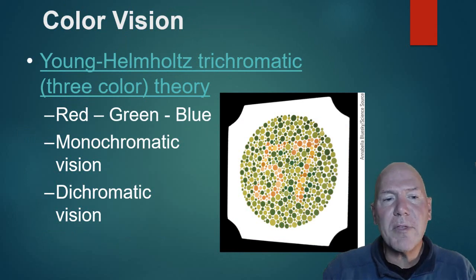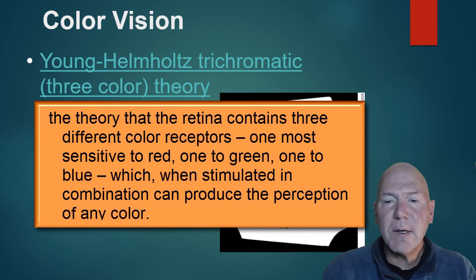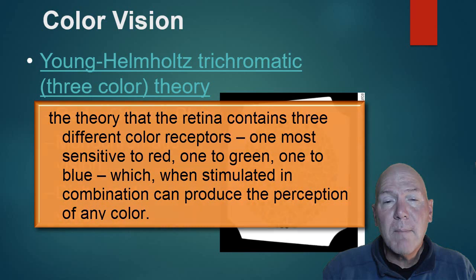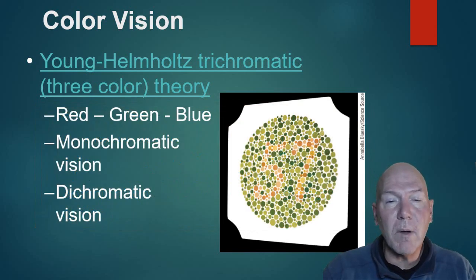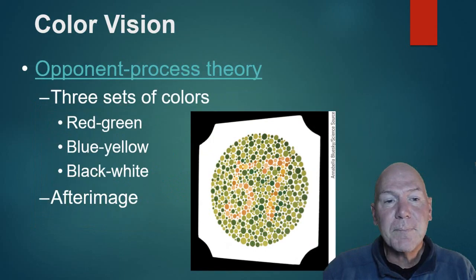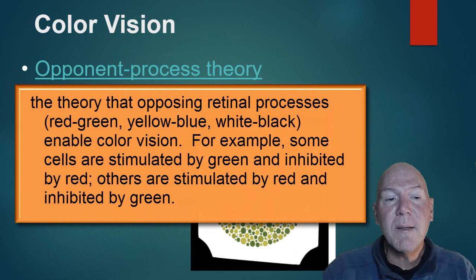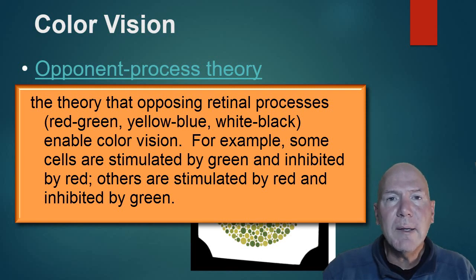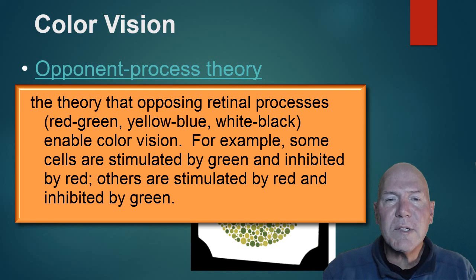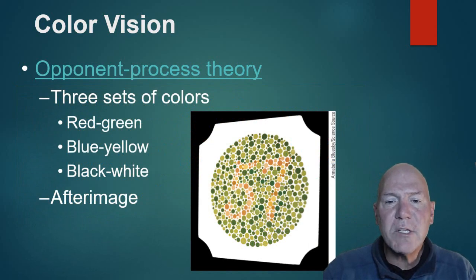There are two color vision theories, and both can be true. The Young-Helmholtz trichromatic theory says our receptors work in bundles of three — red, green, and blue — and different combinations of stimulation dictate what colors we see, similar to how RGB monitors work. The opponent process theory says we have three receptor pairs: red-green, blue-yellow, and black-white. In a neutral environment we don't perceive a specific color, but when one is stimulated more than its opponent, that color comes through.